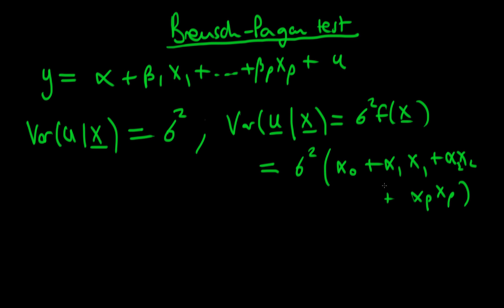There are other linear unbiased estimators which are more efficient than OLS. Also, under heteroskedasticity, it turns out that the standard errors which statistical software programs report are actually wrong — they're biased. So we would need to correct for that. That's why it's so important to test for heteroskedasticity.